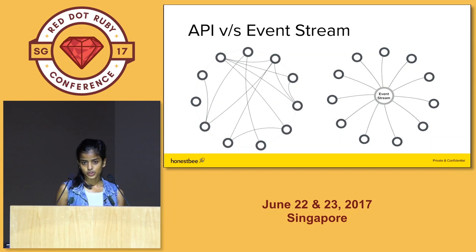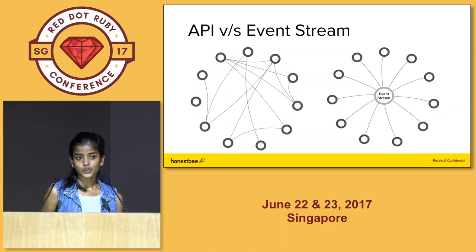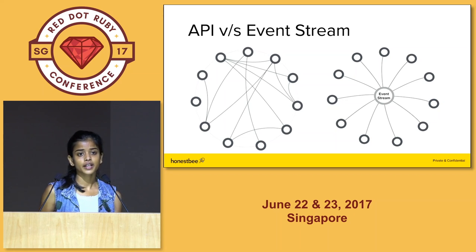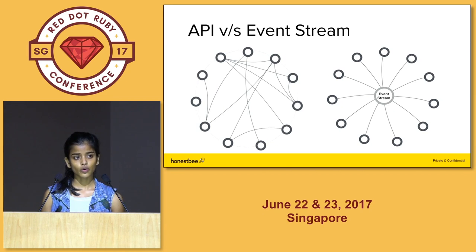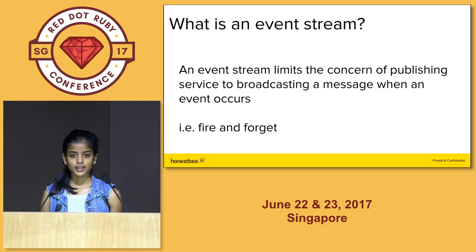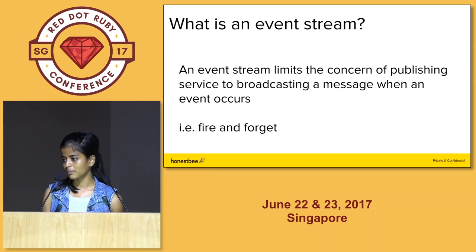On the right, you have a slightly different approach. The benefit of this second approach is that your user creation service only cares about creating a user, and once it's done, it pushes that event out into a message bus. The services that care about user creation then pick up that event and do things like sending out notifications. You're reducing the coupling between your services and separating concerns quite clearly. Fundamentally, it's a fire-and-forget philosophy — you fire a message, don't care what happens next, and another service picks it up, processes it, and continues the flow.